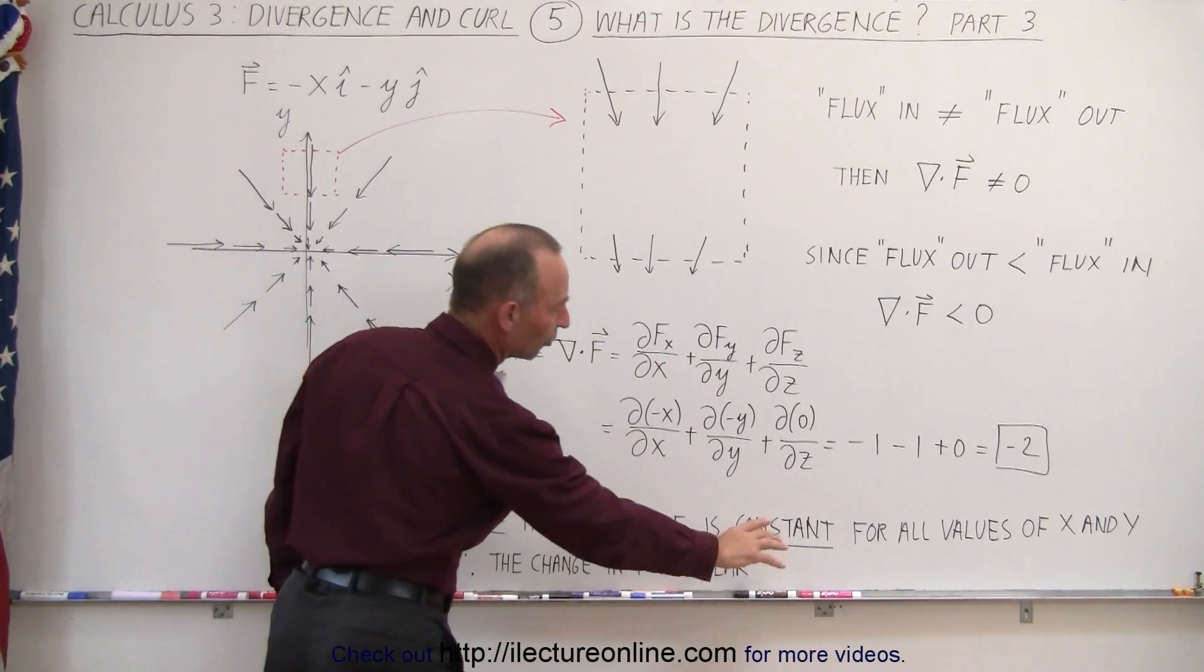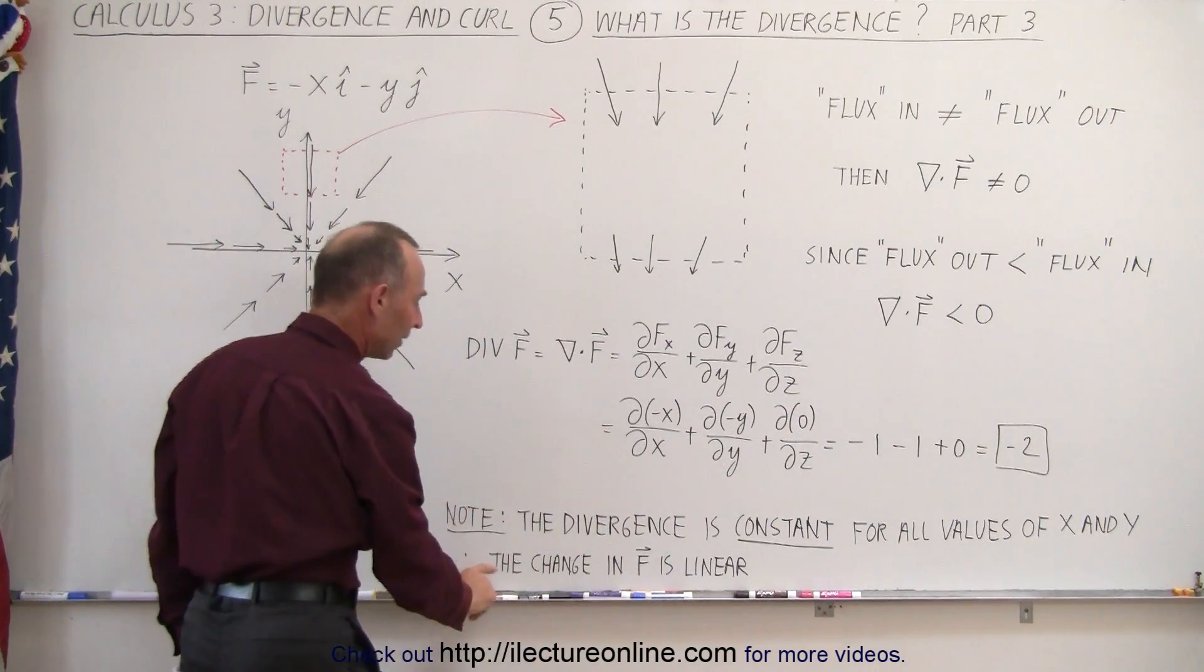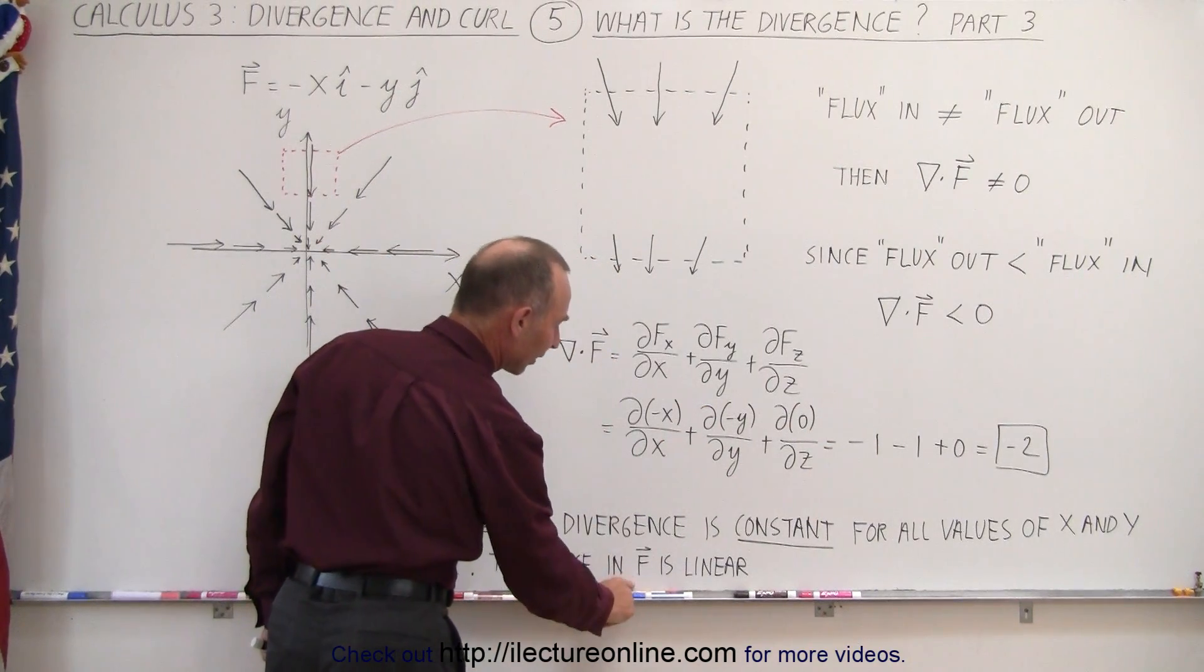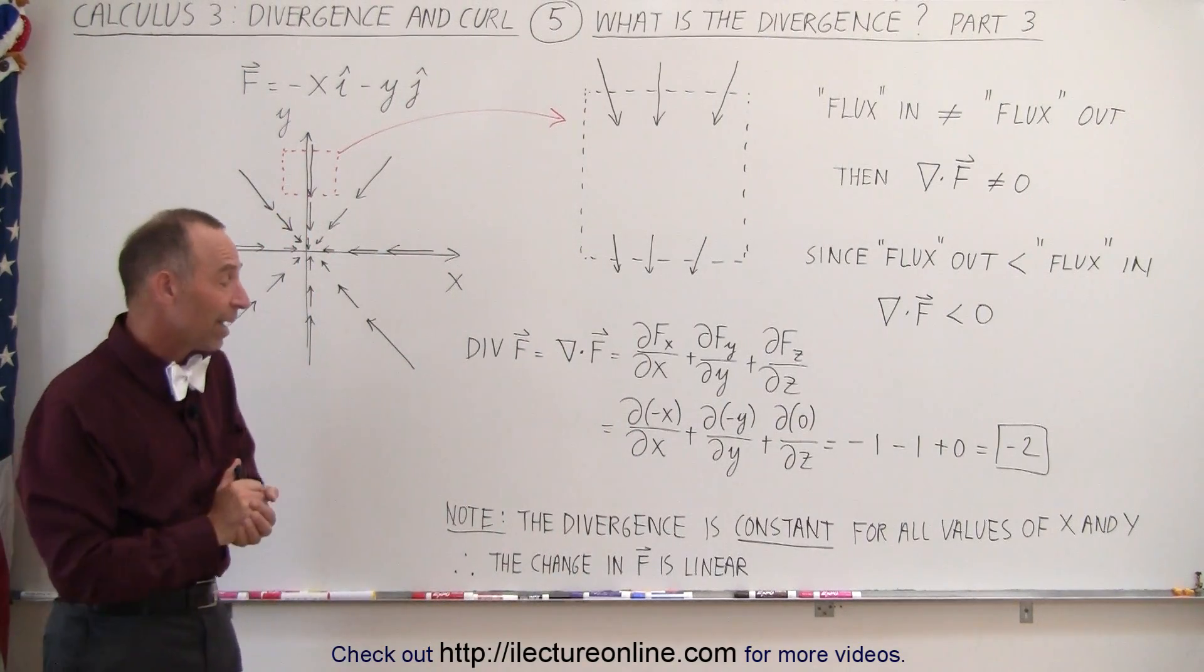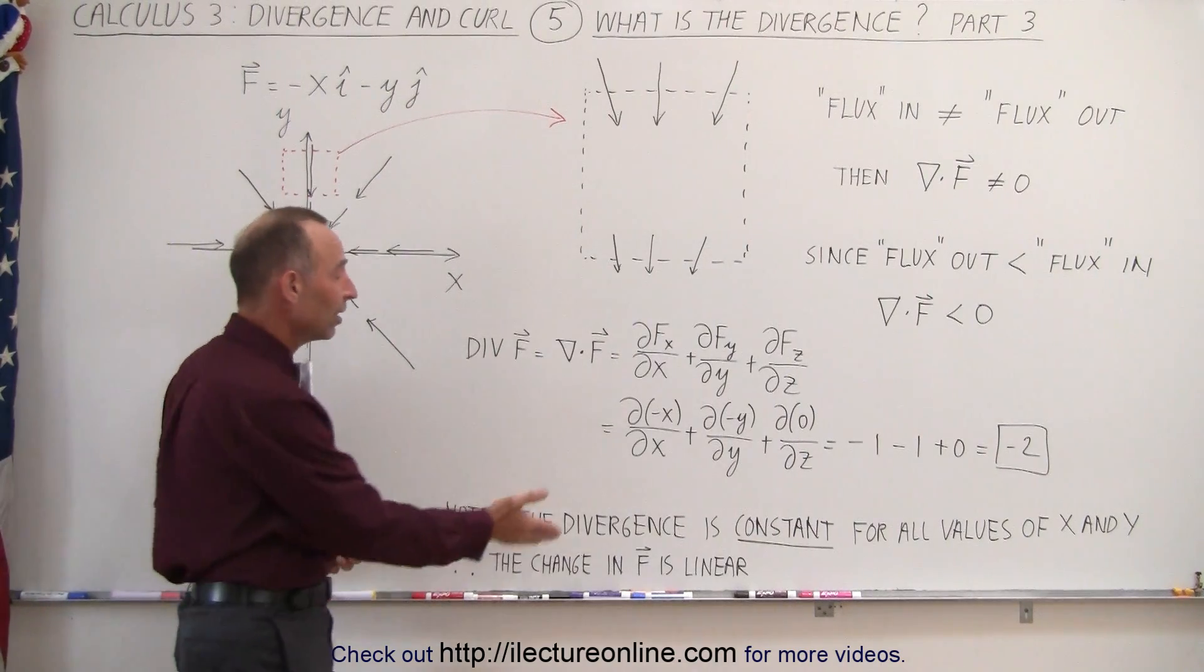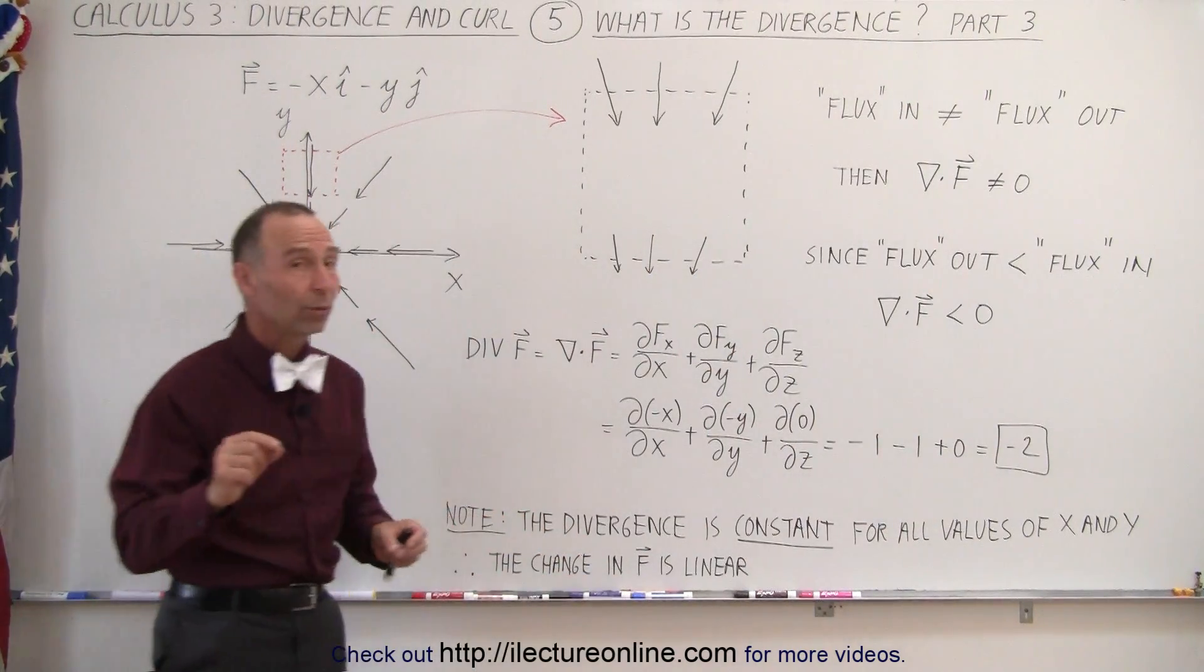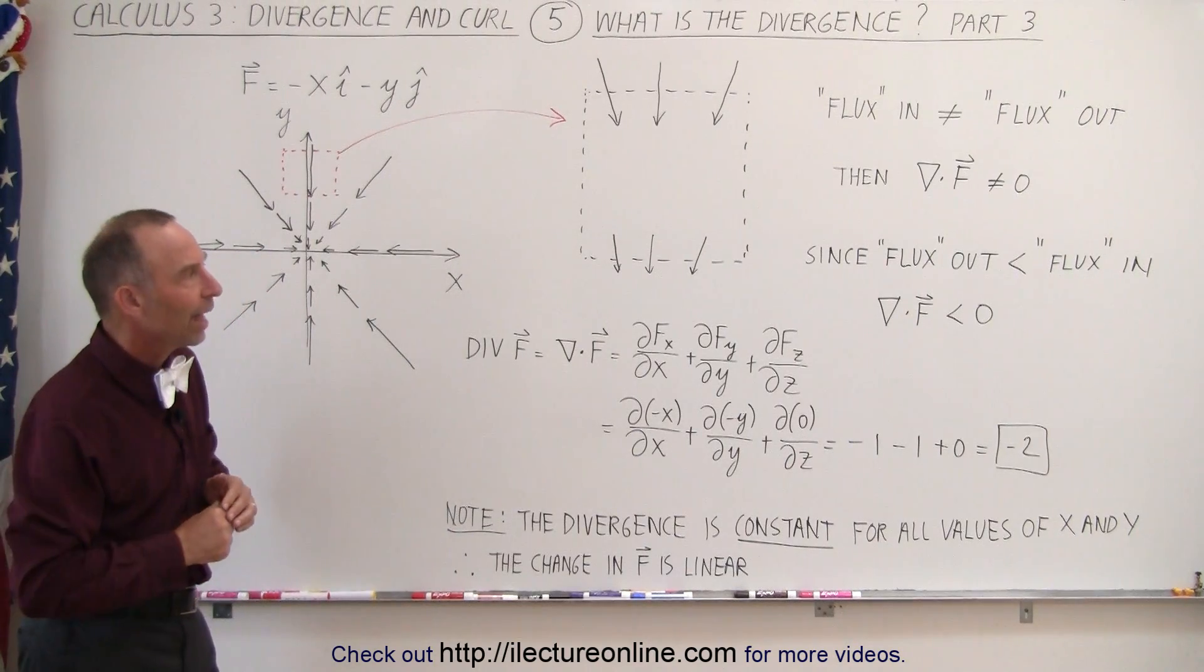So therefore, we can say the divergence is constant for all values of x and y, so that we know then that the change in the vector field is a linear change. We're going to show you some examples where the change in the vector field is not linear, and then you'll notice that the divergence will not be a constant number, but actually will be a function of x and y.